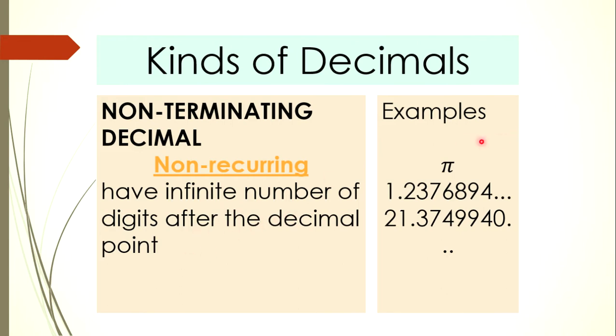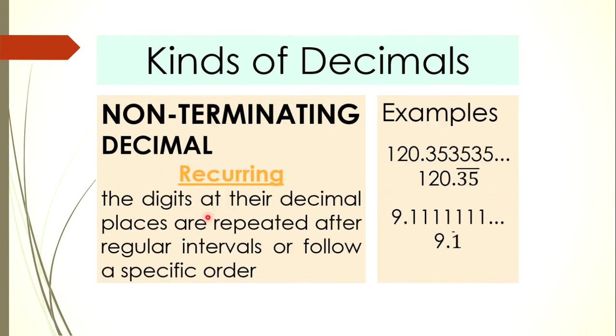Examples include pi, or 1.2376894 and so on and so forth. Those three dots represent 'so on and so forth,' what we call the ellipses. This means there is no limit — an infinite number of digits follow.